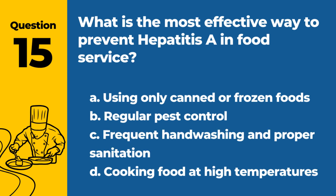Question 15. What is the most effective way to prevent hepatitis A in food service? A. Using only canned or frozen foods. B. Regular pest control. C. Frequent hand washing and proper sanitation. D. Cooking food at high temperatures. Answer: C. Frequent hand washing and proper sanitation. Frequent hand washing and proper sanitation are the most effective ways to prevent hepatitis A in food service.